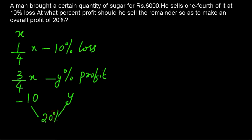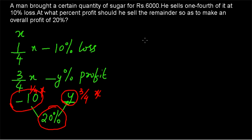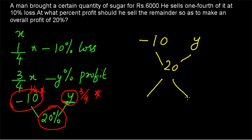When Y% and minus 10% are combined together, we get an overall profit of 20%. We have to find Y. Since we have a combination and the proportion is already given — 1/4 of X and 3/4 of X — we can use the rule of allegation. The ratio is 1 is to 3. So one portion sold at a loss of 10% and three parts sold at a profit of Y%, combined, give an overall profit of 20%.